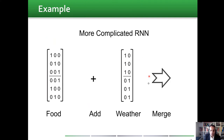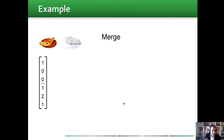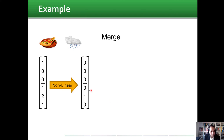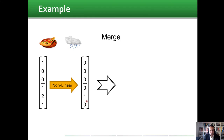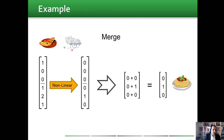Once we have this combined vector, we go to the last stage called merge. We apply a non-linear function to keep the maximum value as one and the rest as zero. The maximum value is two, so we keep it as one and the rest become zero. Then we merge the upper part with the lower part to find the vector representing today's food. The output is the vector representing pasta — meaning yesterday was pizza, today is rainy, so we go to the next meal: pasta.